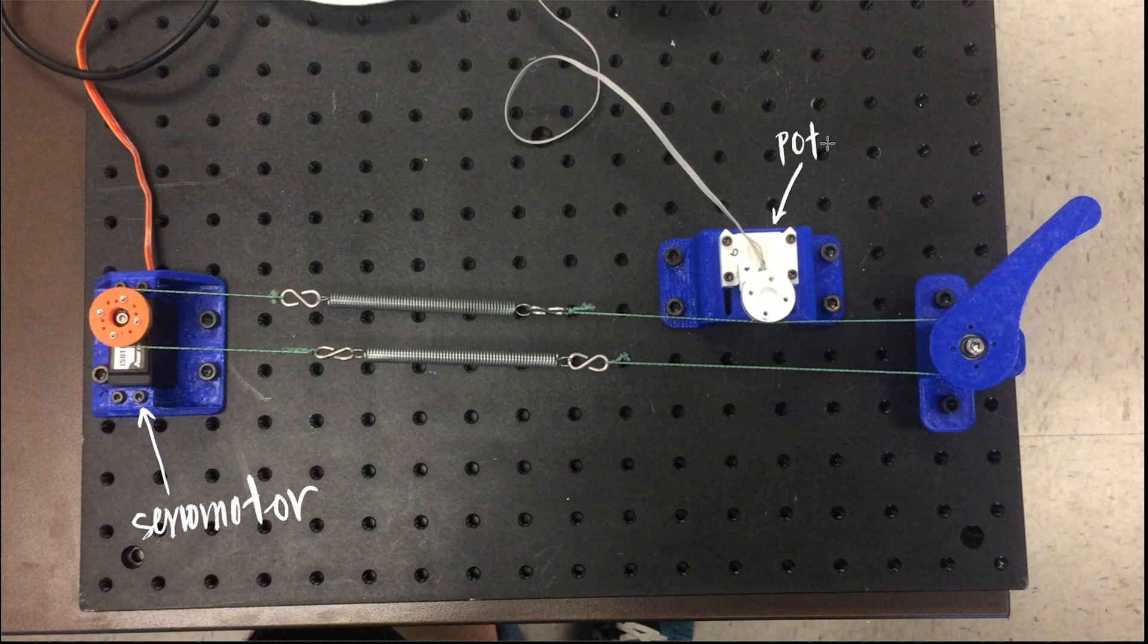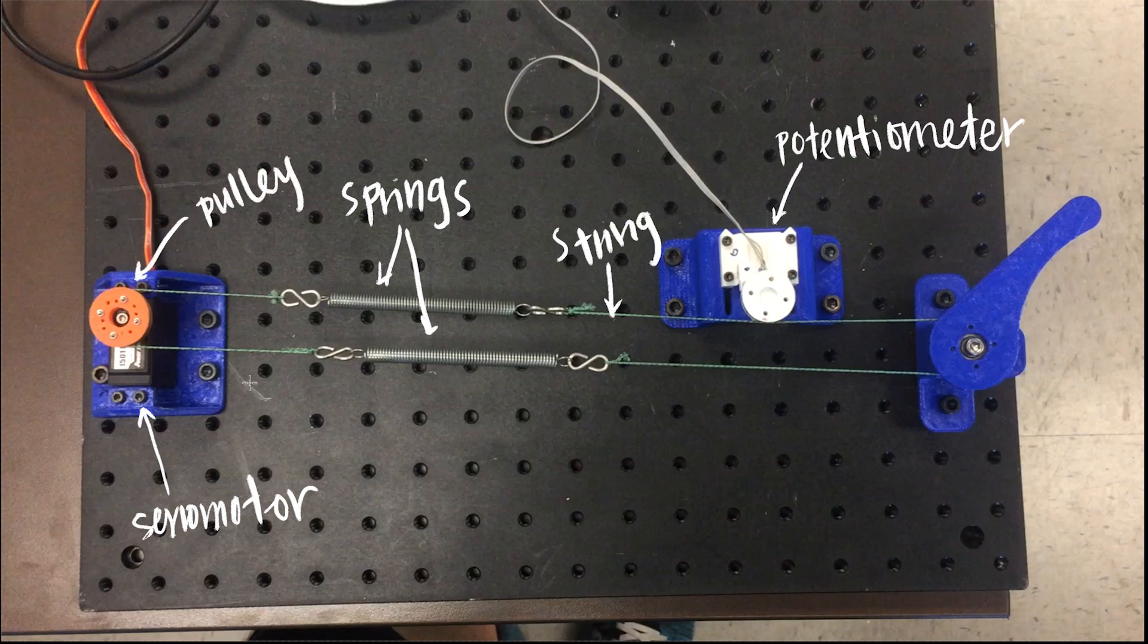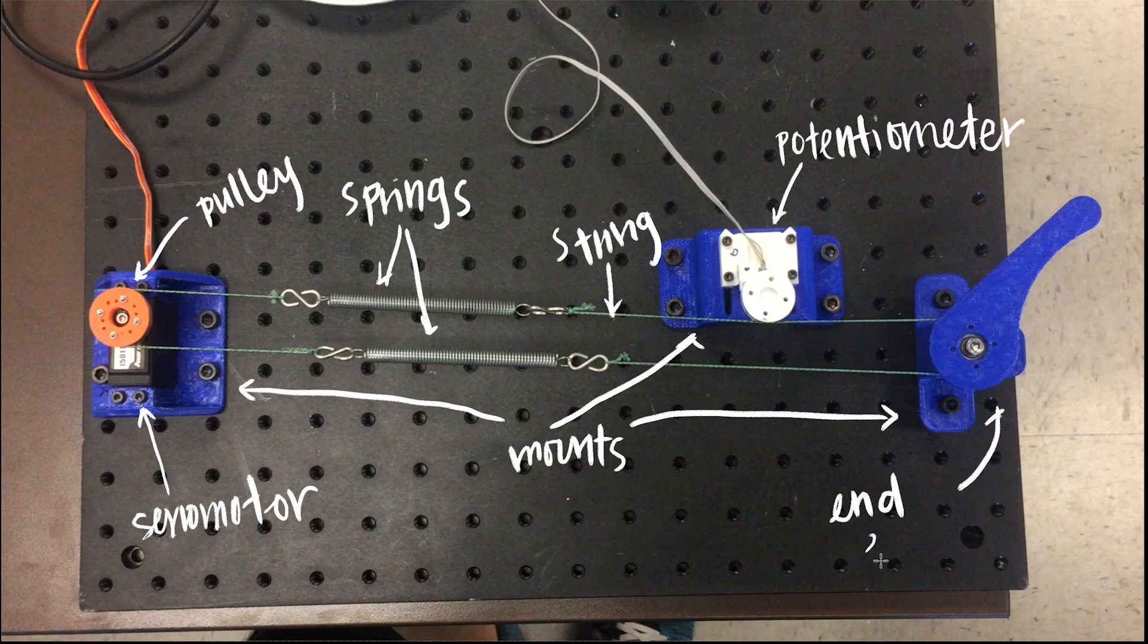the SEA system consists of a servo motor, a continuous rotation potentiometer, two linear extension springs, some string, 3D printed pulleys and mounts, hardware, rubber bands, and bearings. An end effector is added to display the effect of the SEA.